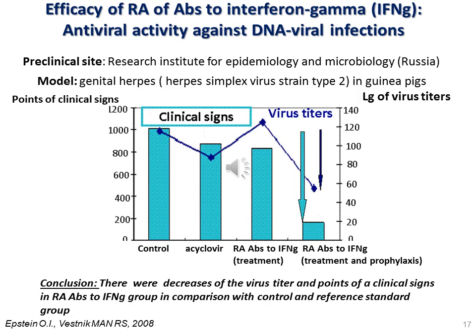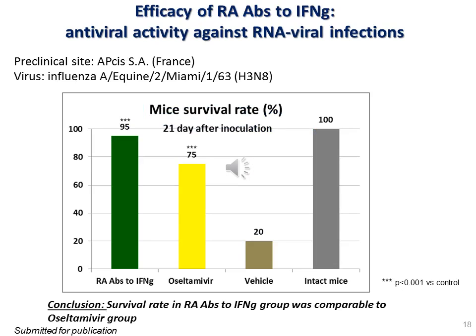Here you can see a study of the effect of release active antibodies to interferon gamma against a typical DNA virus, genital herpes. Guinea pigs were inoculated with the virus and treated with release active antibodies to interferon gamma, controls, or the reference drug aciclovir. The effect of release active antibodies in decreasing virus titer and clinical symptoms was higher than the effect of aciclovir. Efficacy of release active antibodies to interferon gamma against an RNA virus was also studied using an influenza model, and the result was comparable to the effect of the standard anti-flu substance oseltamivir.